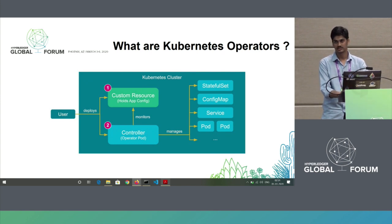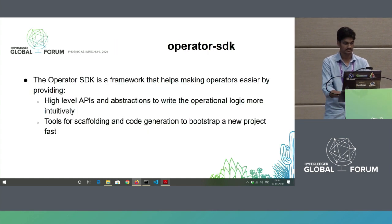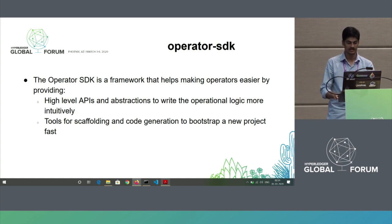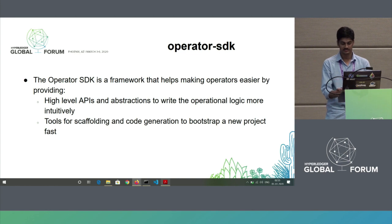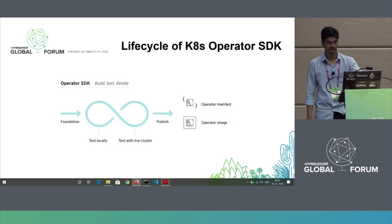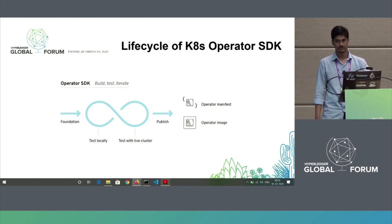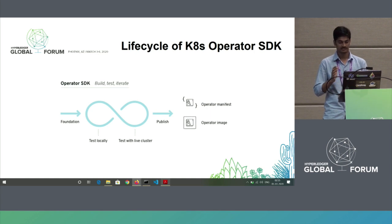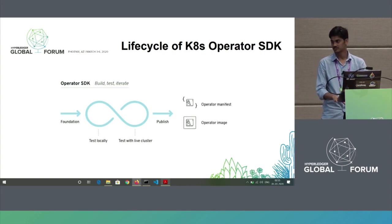This is how an operator works. A programmer deploys a custom resource as well as a controller. The custom resource holds all the configuration details and specifications of the app, whereas the controller handles all the business logic, actions, and behaviors. Once we deploy a custom resource and a controller, the controller will manage all the stateful sets, services, pods, secrets, et cetera. If something happens to our pods, the controller will take charge and change the state. We use the Operator SDK for that — it is a framework that allows us to write high-level APIs and scaffolding, and is used for code generation. With the Operator SDK we can quickly bootstrap a new project that uses operators.